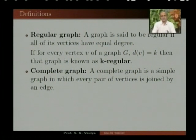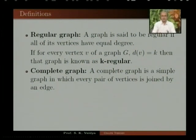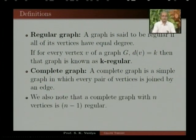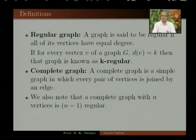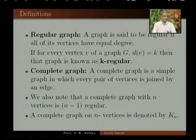Complete graph: a complete graph is a simple graph in which every pair of vertices is joined by an edge. We also note that a complete graph with n vertices is (n minus 1)-regular. A complete graph on n vertices is denoted by Kn.